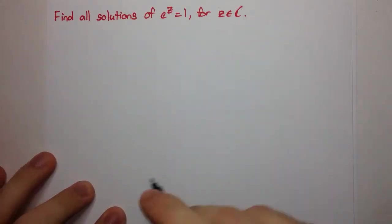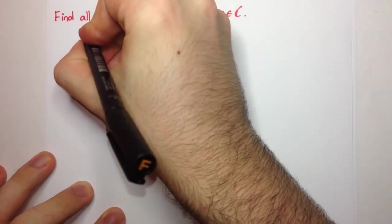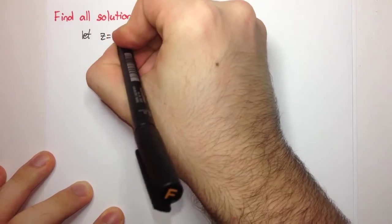So if z is a complex number, then we can say let z equal x plus iy.